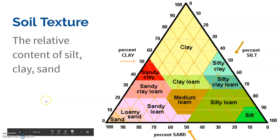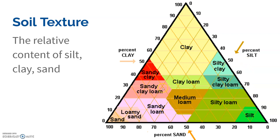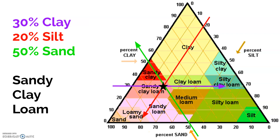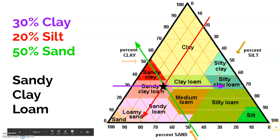We determine soil composition using a soil texture triangle. Soil texture is the relative content of silt, sand, and clay. If you have a lot of small particles you'll have a mostly clay soil; a lot of sand means sandy soil. There are different mixtures in between. You'll notice on the edges there is a percent scale — clay goes zero to 100, silt zero to 100, and sand on the bottom also goes zero to 100, though it goes backwards, which is a bit counterintuitive.